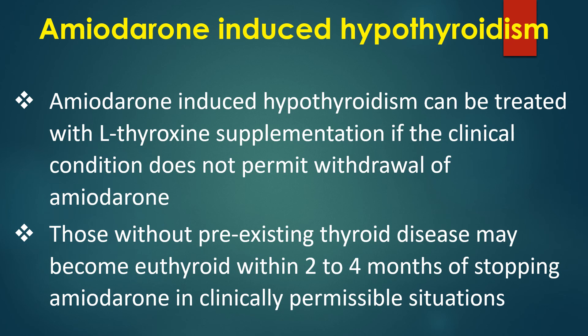Amiodarone-induced hypothyroidism can be treated with levothyroxine supplementation if the clinical condition does not permit withdrawal of amiodarone. Those without pre-existing thyroid disease may become euthyroid within 2 to 4 months of stopping amiodarone in clinically permissible situations.